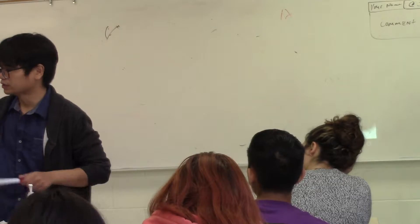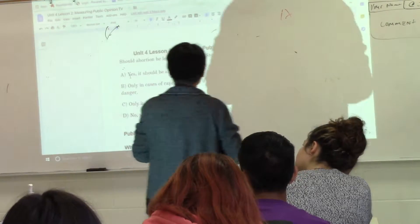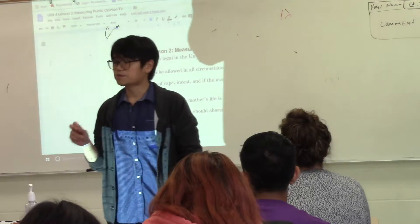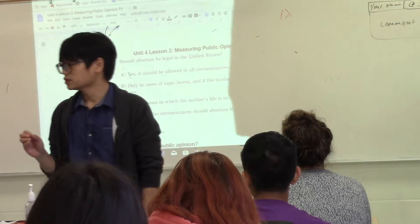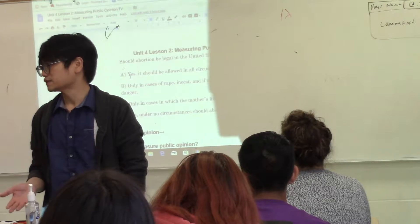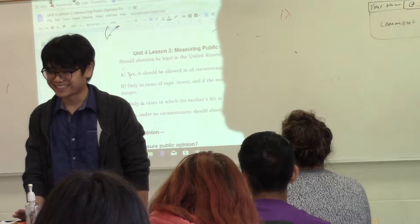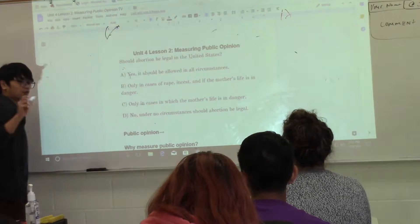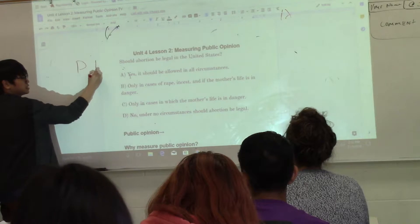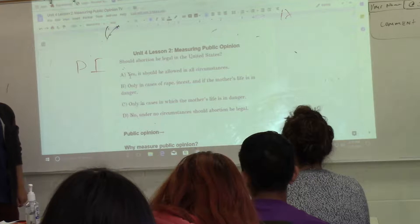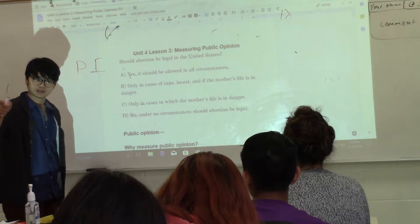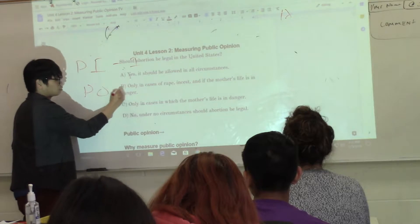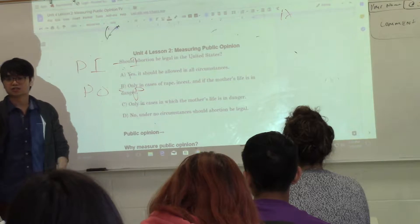Today we're talking about public opinion, and you need to remember what public opinion is. Public opinion is a distribution of a population's beliefs or attitudes about government and about politics. What we talked about yesterday is political ideology — liberals, conservatives — it's a set of ideas that belong to an individual. Public opinion belongs to a population, to a group of people.